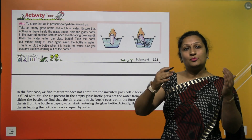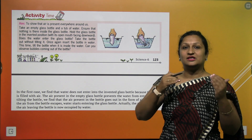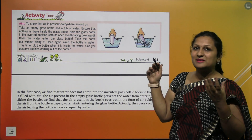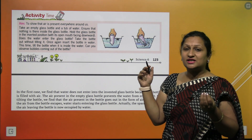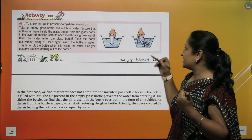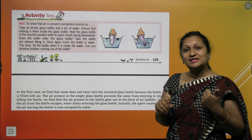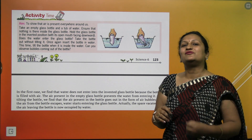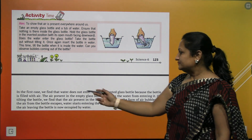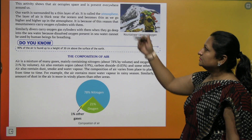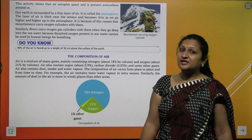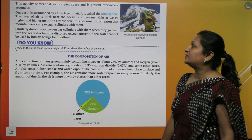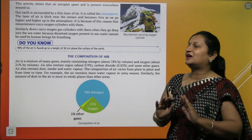Ab pehle case mein paani andar kyon nahi gaya? Because bottle empty thi. Aur bottle ke andar kya filled hai? Air. Toh woh air water ke oopar pressure laga rahi hai jiski wajah se paani andar move nahi kar paa raha. But jab hamne bottle tilt kar di, to bottle ke andar jo air thi woh bahar escape hone lagi in the form of bubbles. Aur kyunki jagah khaali hoti gayi, isliye wahan pe water fill hota gaya. Hamin iss activity se pata chalta hai ke air space ko occupy karati hai aur har jagah present hai.